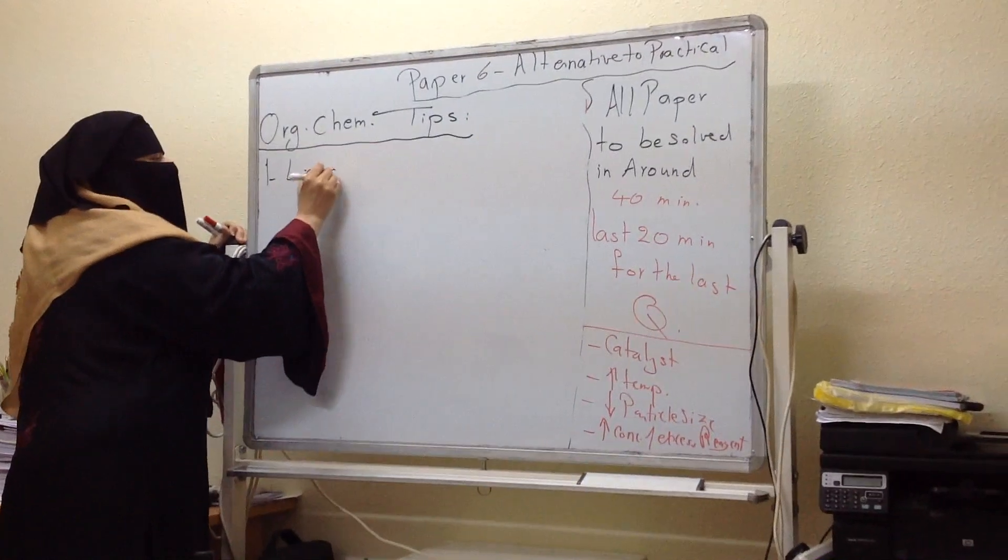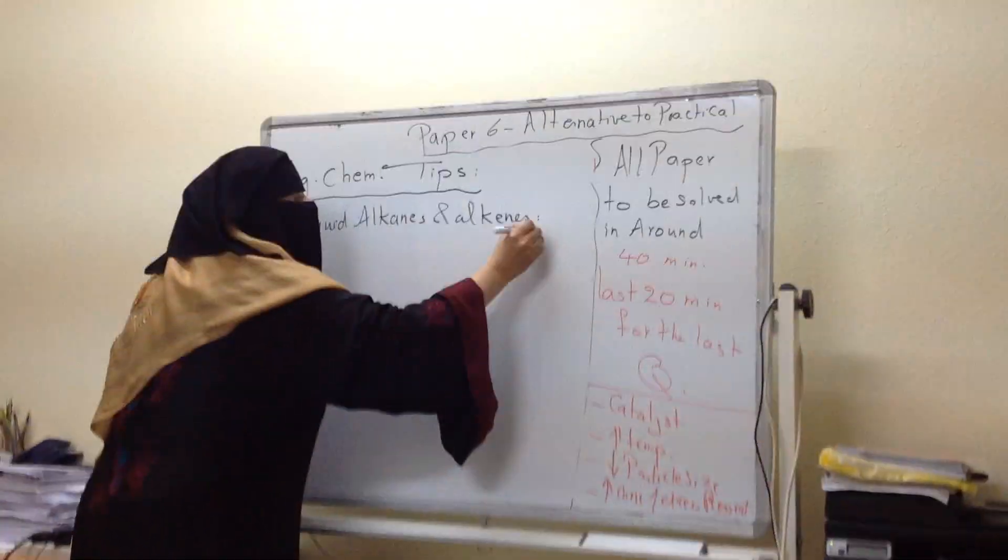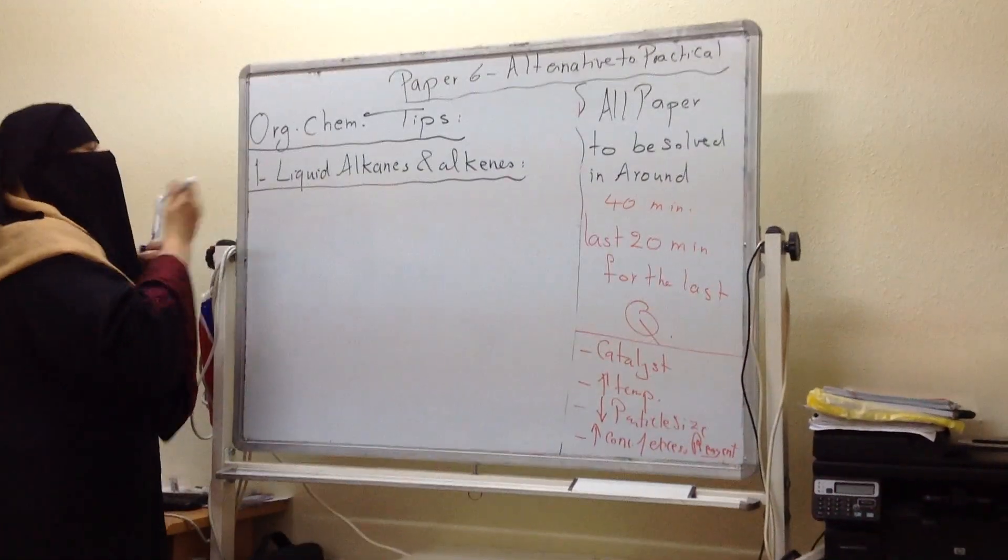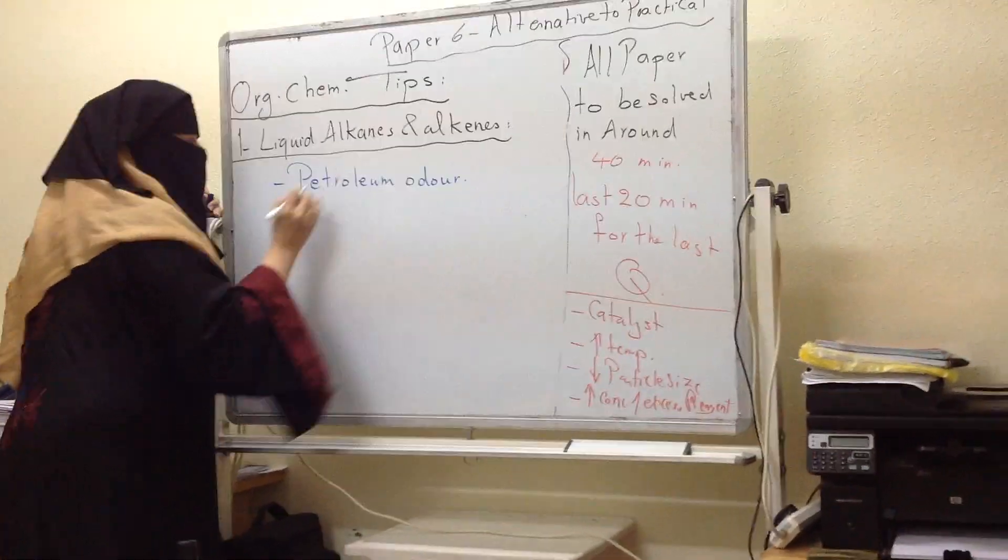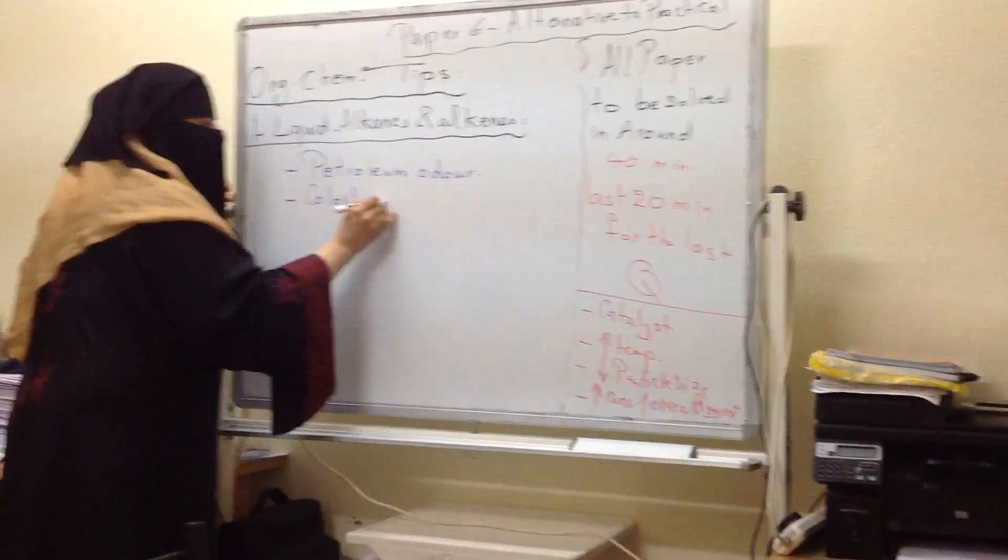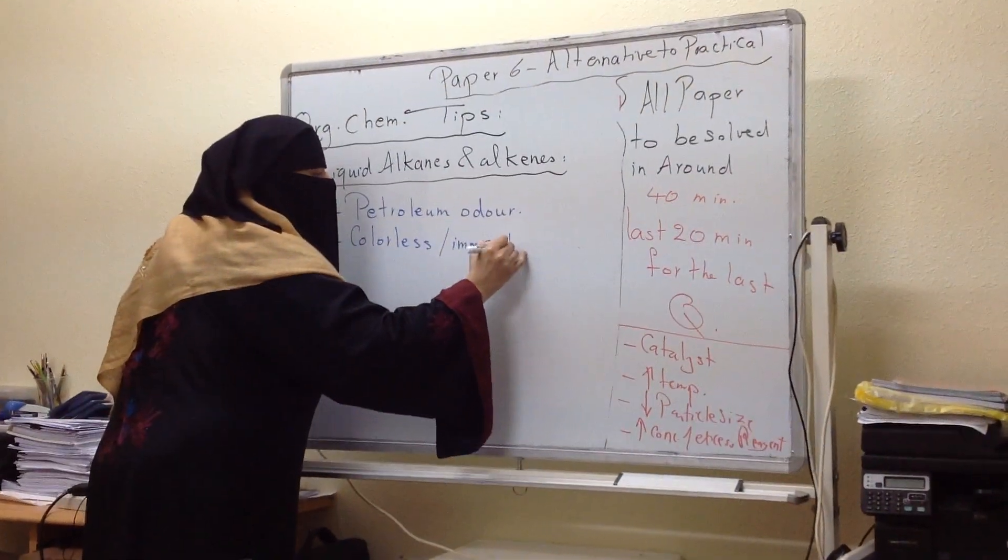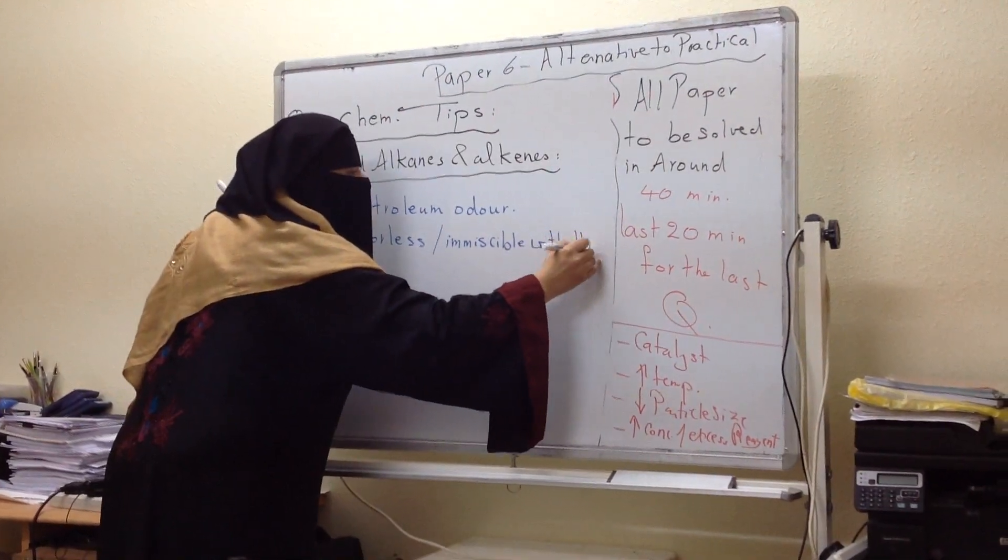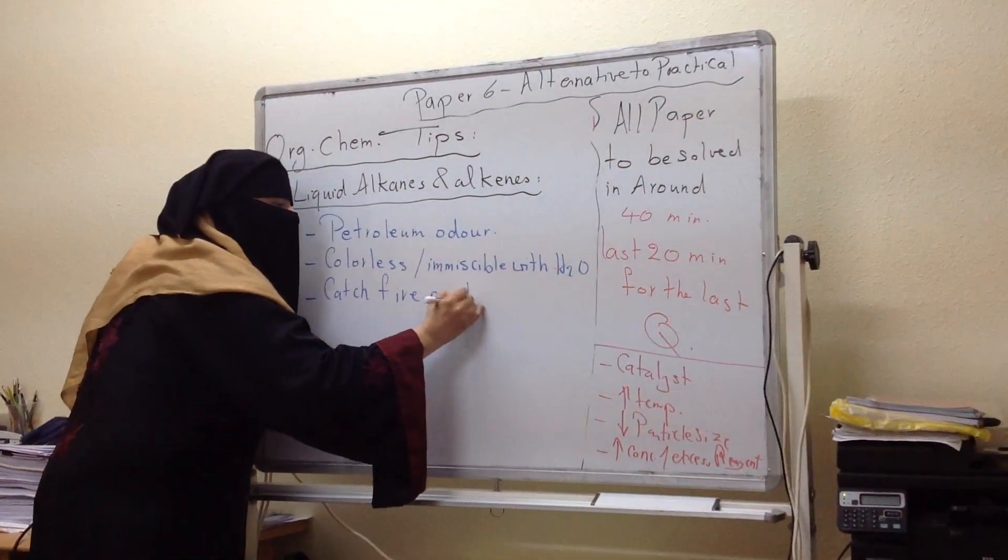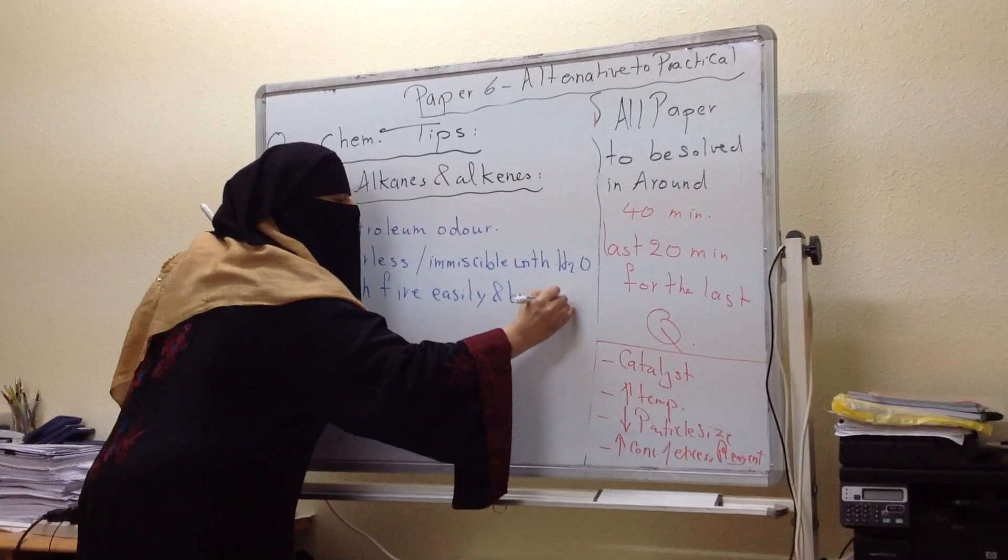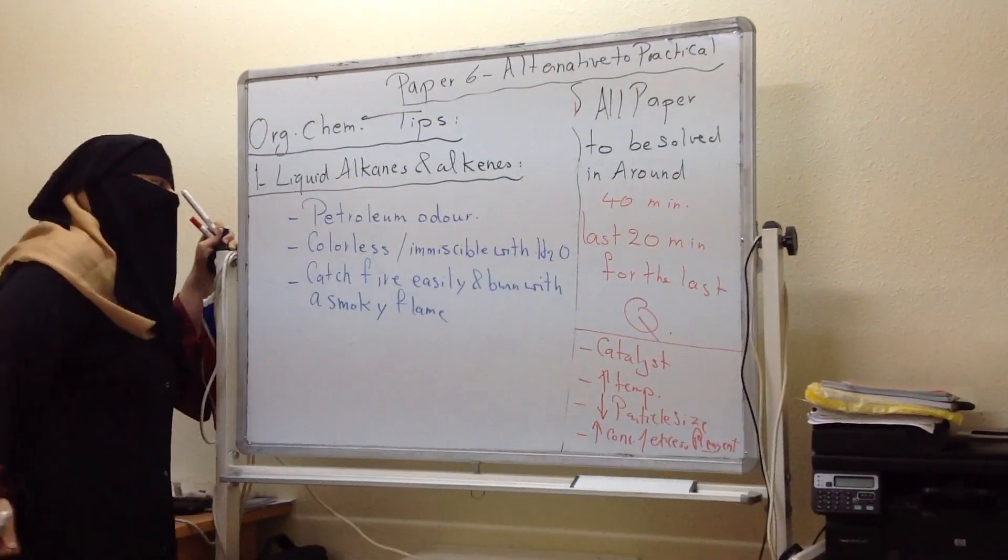What are these organic chemistry tips? First thing: liquid alkanes and alkenes. How are they characterized? First, they have petroleum odor, or petroleum smell. They are colorless, immiscible with water. Also, they catch fire easily and burn with a smokey flame.